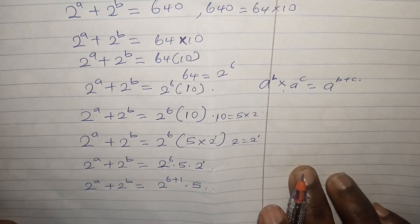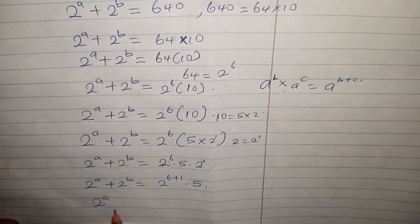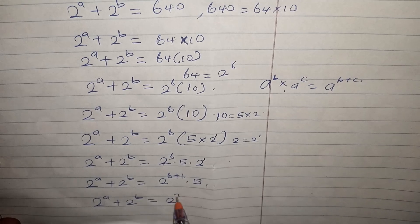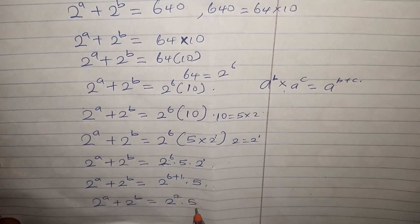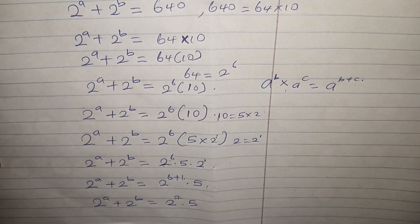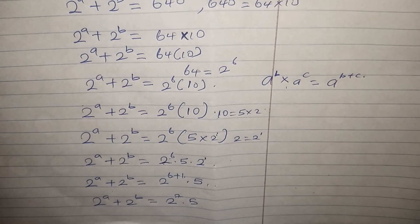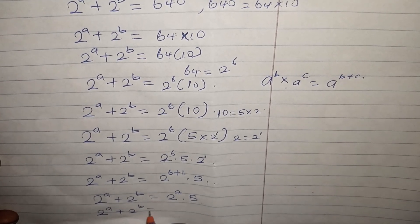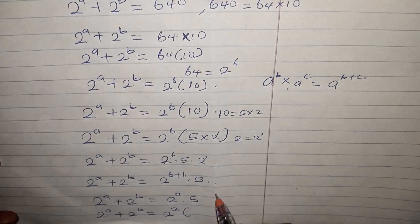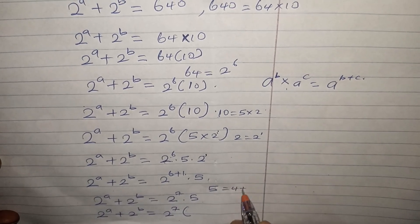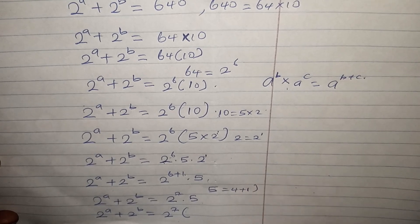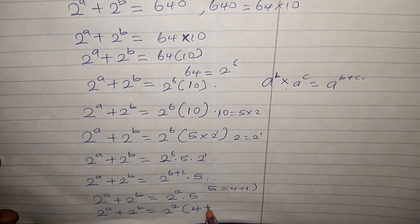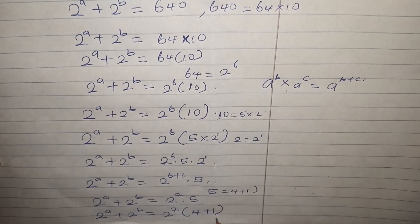So we now have 2^a + 2^b = 2^7 × 5. Now, 6 plus 1 gives us 7, so we have 2 to the power of 7 times 5. And recall that 5 is also equal to 4 plus 1, so we can write 2^7 times (4 plus 1).